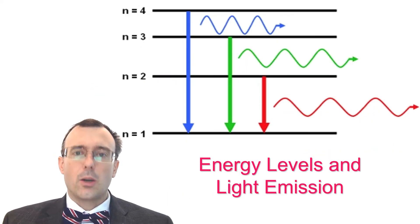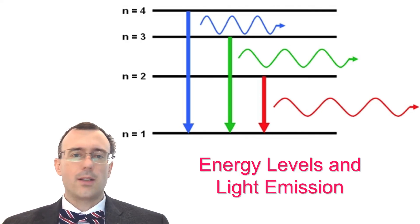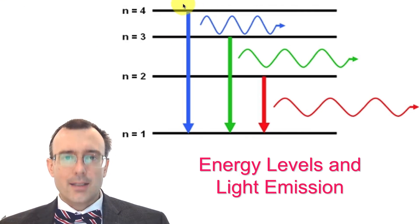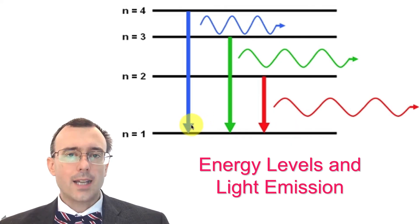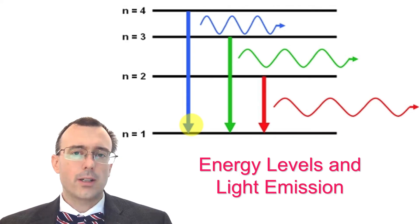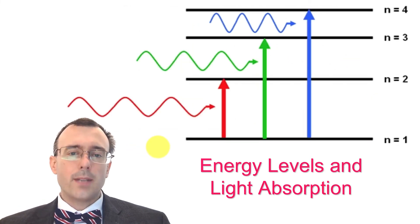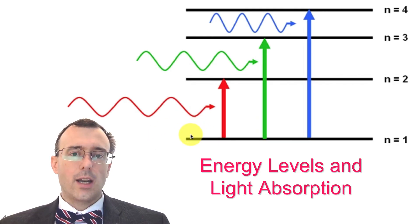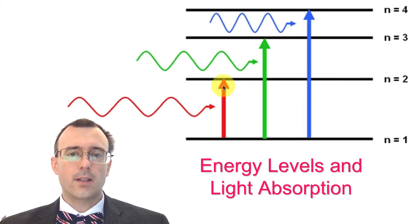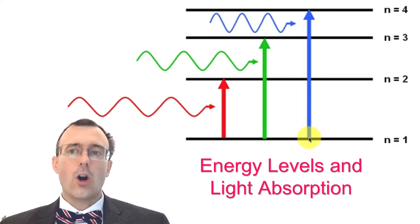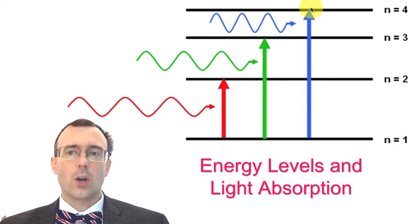Let's go back to the energy level diagram. If an electron at the top energy level comes down all the way to the lowest possible energy level, it's going to give off light corresponding to the energy lost. Similarly, you can cause electrons to go up in energy level by absorbing energy. One way they absorb energy is by absorbing light — an electron can go from energy level one up to energy level two if it absorbs a photon corresponding to the energy difference of those levels, or up to energy level four if it absorbs a photon matching that larger energy difference.